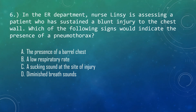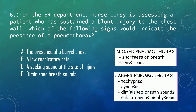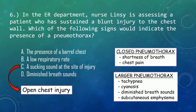Question 6: In the ER department, Nurse Lindsay is assessing a patient who has sustained a blunt injury to the chest wall. Which of the following signs would indicate the presence of a pneumothorax? The patient has sustained a blunt or closed chest injury. Basic symptoms of a closed pneumothorax are shortness of breath and chest pain. A larger pneumothorax may cause tachypnea, cyanosis, diminished breath sounds, and subcutaneous emphysema. Hyperresonance may also occur on the affected side. A sucking sound at the site of injury would be noted with an open chest injury. Therefore, the correct answer is letter D.